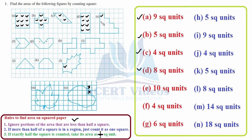For part E, counting the complete squares: two, three, four, five, six, seven, eight, nine, and ten — therefore the area is 10 square units. For part F, half and half makes one, half and half makes one again — therefore two, three, and four — giving 4 square units.